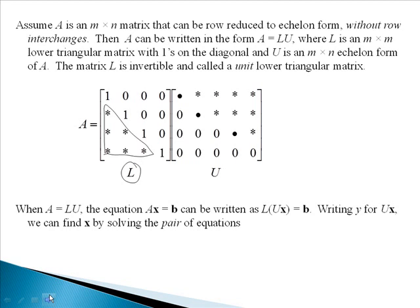When A equals L times U, the equation Ax equals B can be written as L times Ux equals B. If I replace Ux with Y, then we can find X by solving this pair of equations: L times Y equals B and U times X equals Y. You're going to want to remember these two equations because you have to use those to solve using the LU factorization. The easiest way to remember them is think of two equations as two girls named Lib and Uxy.